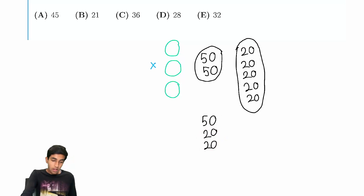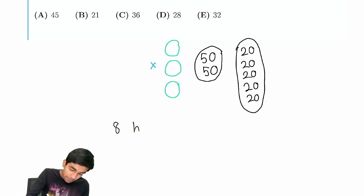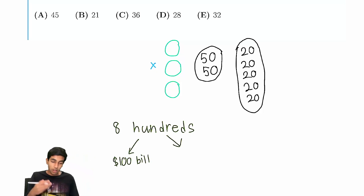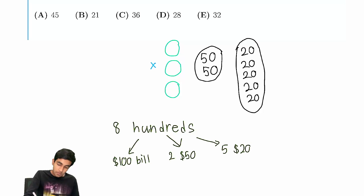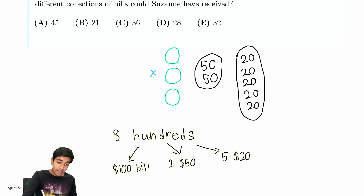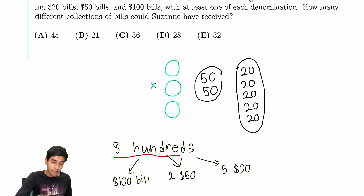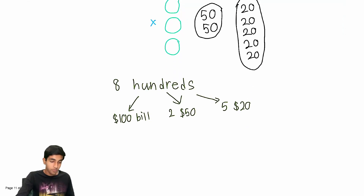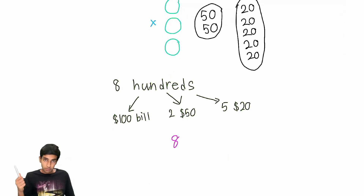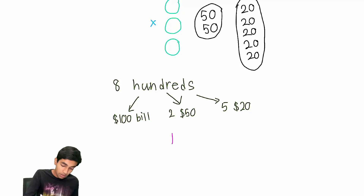So this becomes a question of distributing eight hundreds into three classes: each hundred is either covered by a $100 bill, by two $50 bills, or by five $20 bills. Each class must have at least one, since we need at least one of each denomination. We have eight hundreds to distribute into three groups, which is a classic stars and bars problem — eight stars and two bars.